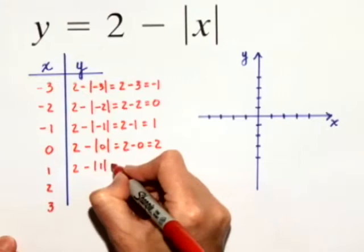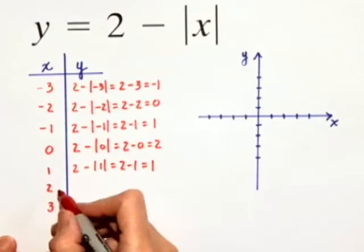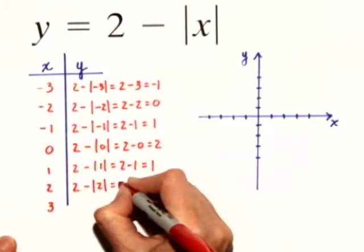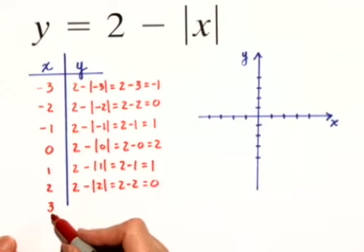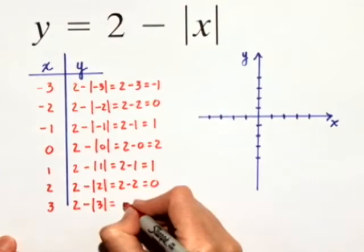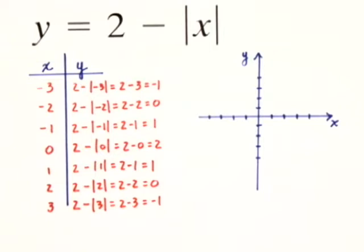When x is 1, we get 2 minus the absolute value of 1, which is just 2 minus 1, which is 1. When x is 2, we get y equals 2 minus the absolute value of 2, which is just 2 minus 2, or 0. And finally, when x is 3, we get y equals 2 minus the absolute value of 3, which is just 2 minus 3, or negative 1.